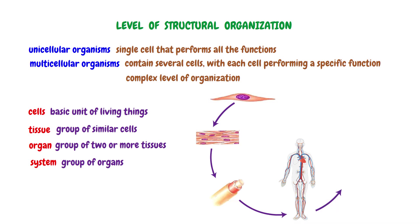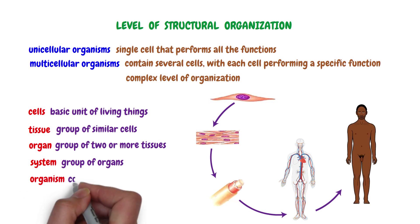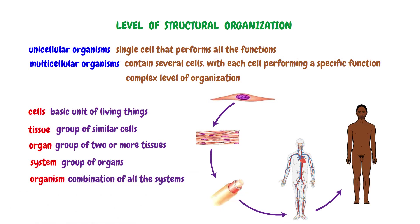The fifth and last level of complexity is the organism, which is the combination of all the systems. The human body has 11 systems, and each system performs a particular function. For instance, the cardiovascular system pumps and transports blood throughout the body, the digestive system digests and absorbs nutrients, and the respiratory system delivers oxygen to the body.